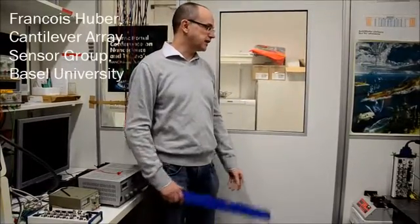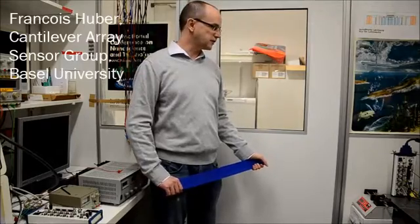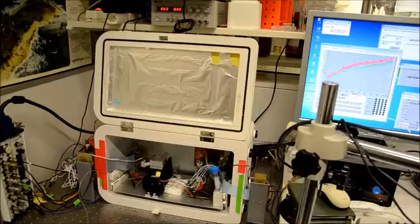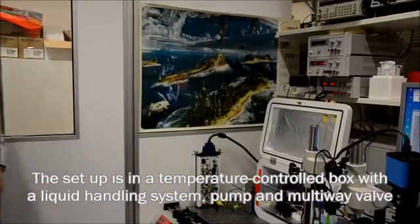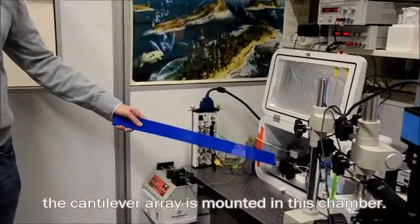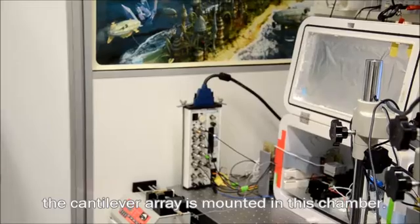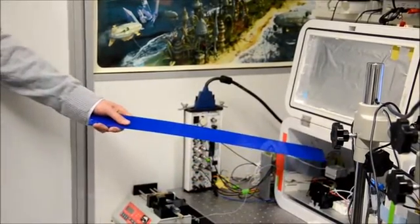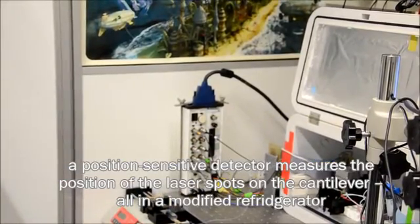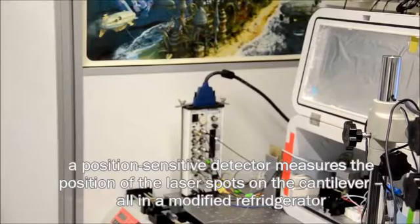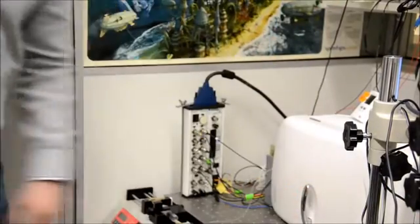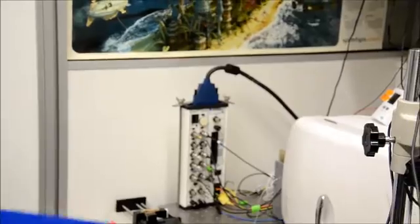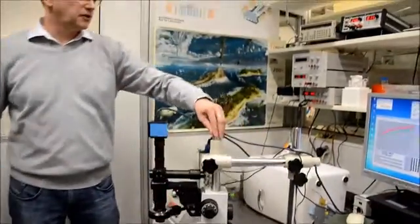I'd like to show you the equipment we use to do our measurements. We have here the setup with a temperature controlled box. We have the liquid handling system here with a pump and a multi-way valve. Then here is the actual device with a liquid handling chamber. The cantilever array is mounted in that chamber. And then here is a position sensitive detector to measure the position of the laser spots on the cantilever. And we can close it. It's a modified refrigerator we use.